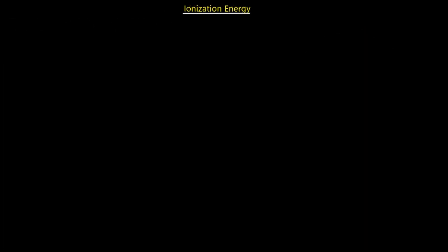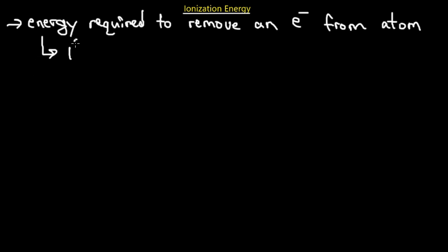Ionization energy is defined as the amount of energy required to remove an electron from a neutral atom. There can be multiple ionization energies — first, second, third — referring to each successive electron removed. The electrons removed are on the valence shell, called valence electrons. Electrons close to the nucleus are highly attracted to it and therefore hard to remove.